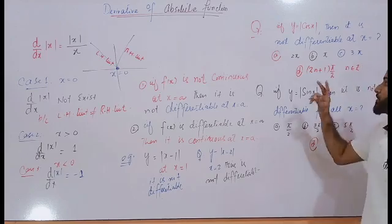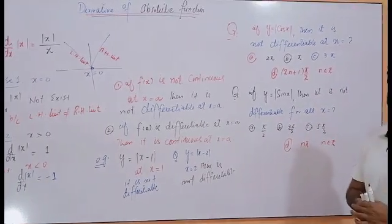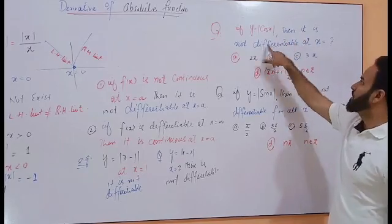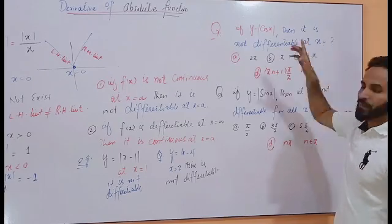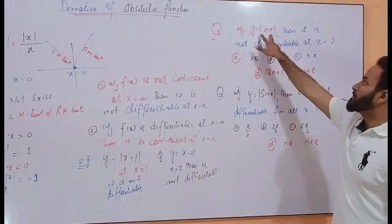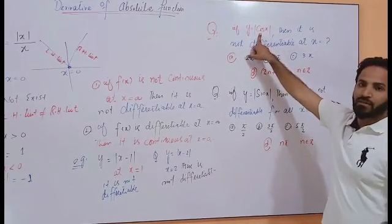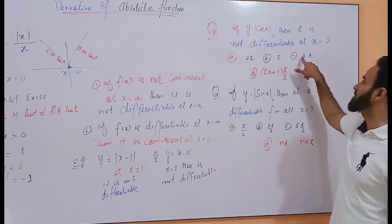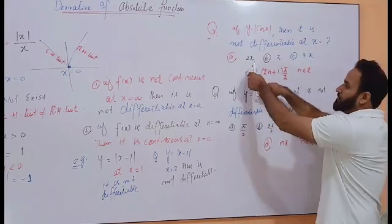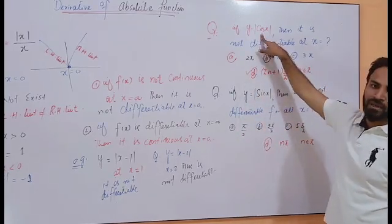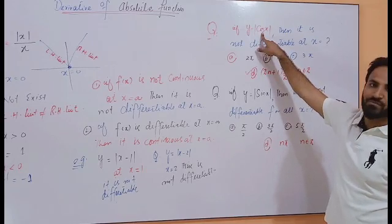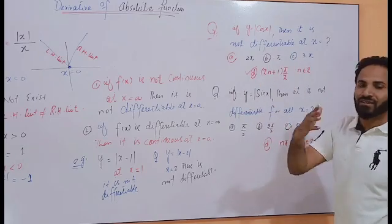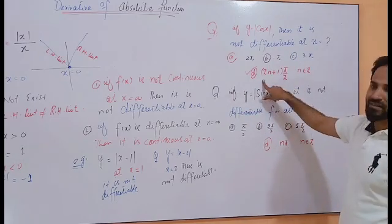Two more important questions which have appeared in different exams many times. If y equals |cos x|, at which point is it not differentiable? Remember, students: all those points where the absolute becomes 0, at that point the absolute function is not differentiable. The options are: a) 2π, b) π, c) 3π, and d is the right answer, because at that point cos x becomes 0, which means the absolute becomes 0, indicating the function is not continuous and therefore not differentiable at that point.